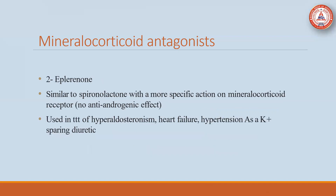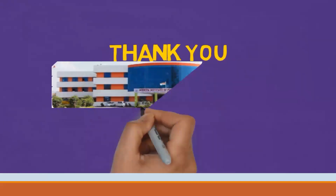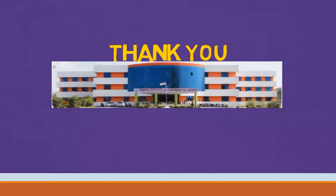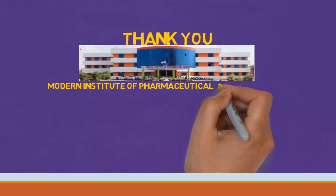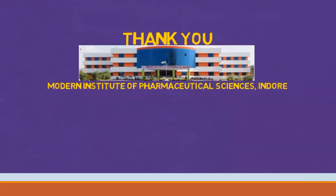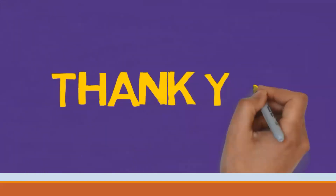The last drug is eplerenone, similar to spironolactone but with a more specific action on mineralocorticoid receptors and no anti-androgenic effect. It is used for the treatment of hyperaldosteronism, heart failure, and hypertension as a potassium-sparing diuretic. That's all for now. Today we studied about glucocorticoids, which are a part of corticosteroids. In the next lecture, we will study about mineralocorticoids — their structure, synthesis, actions, and antagonists. Thank you very much.